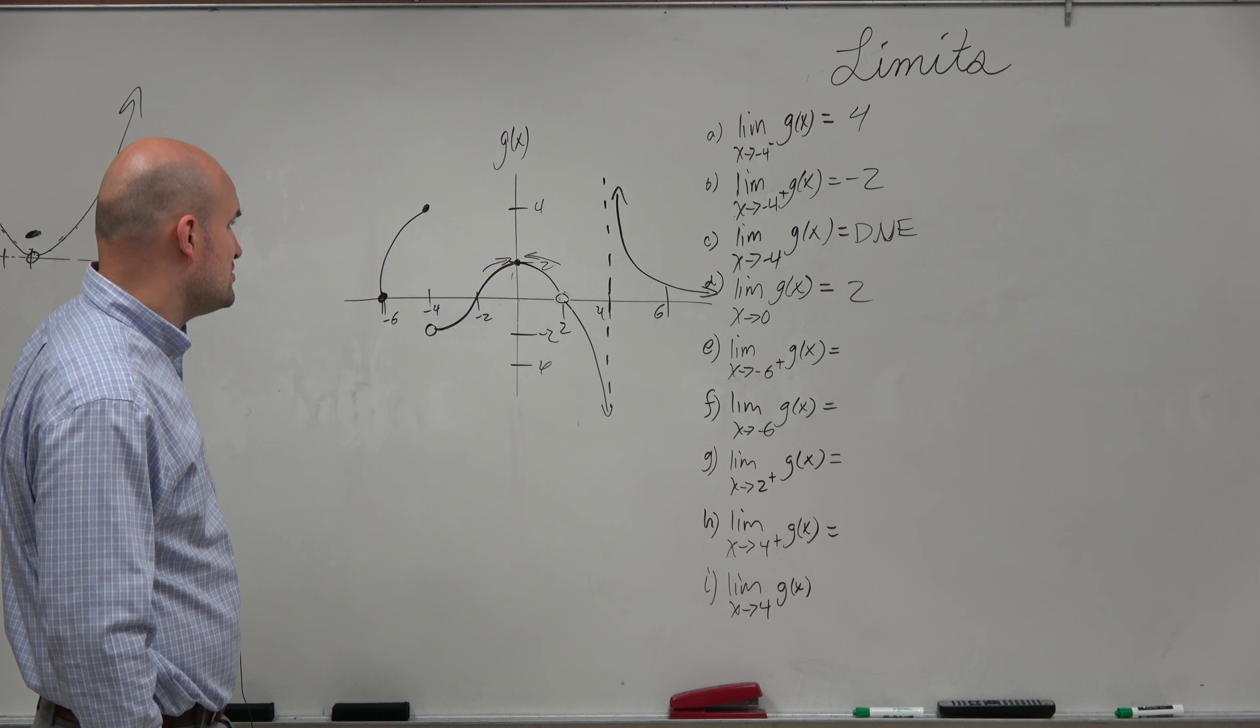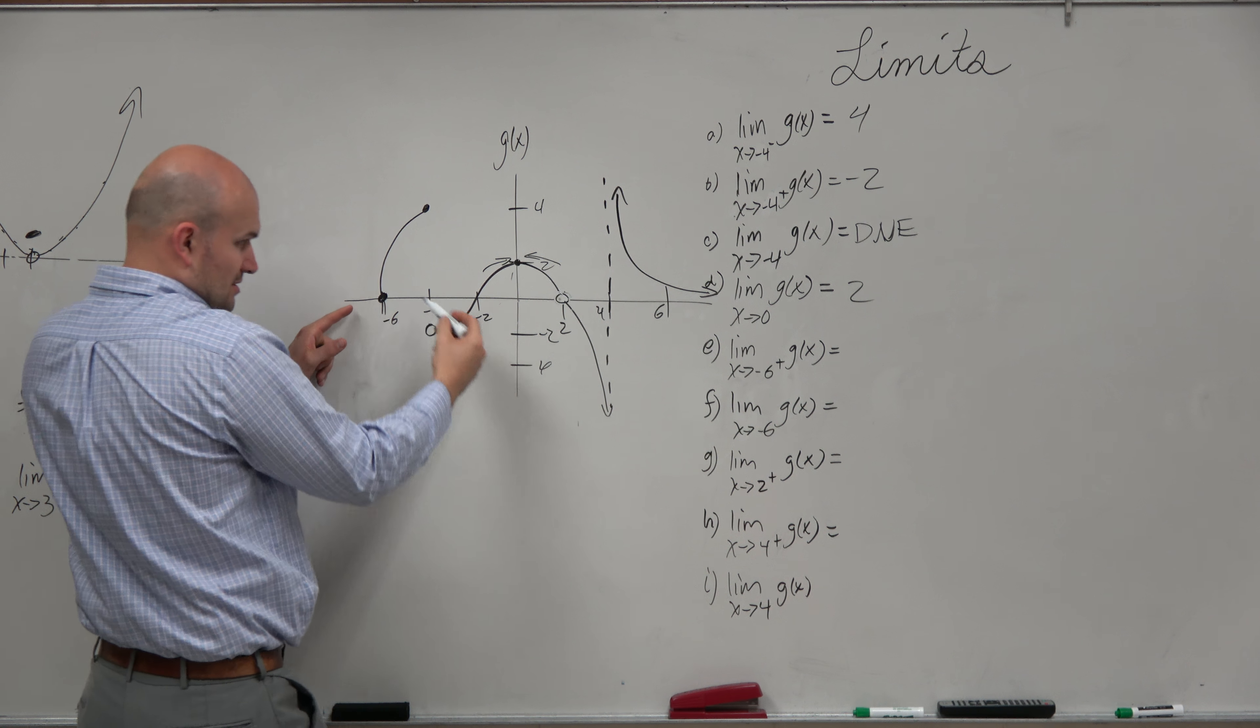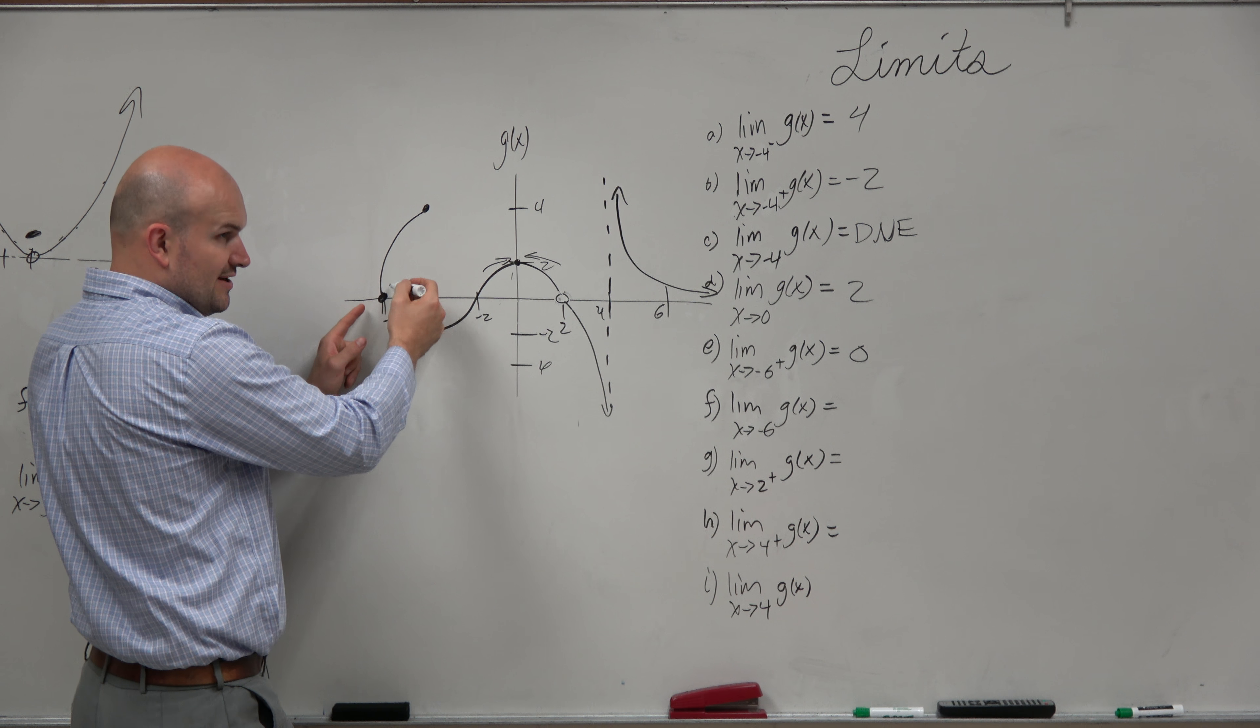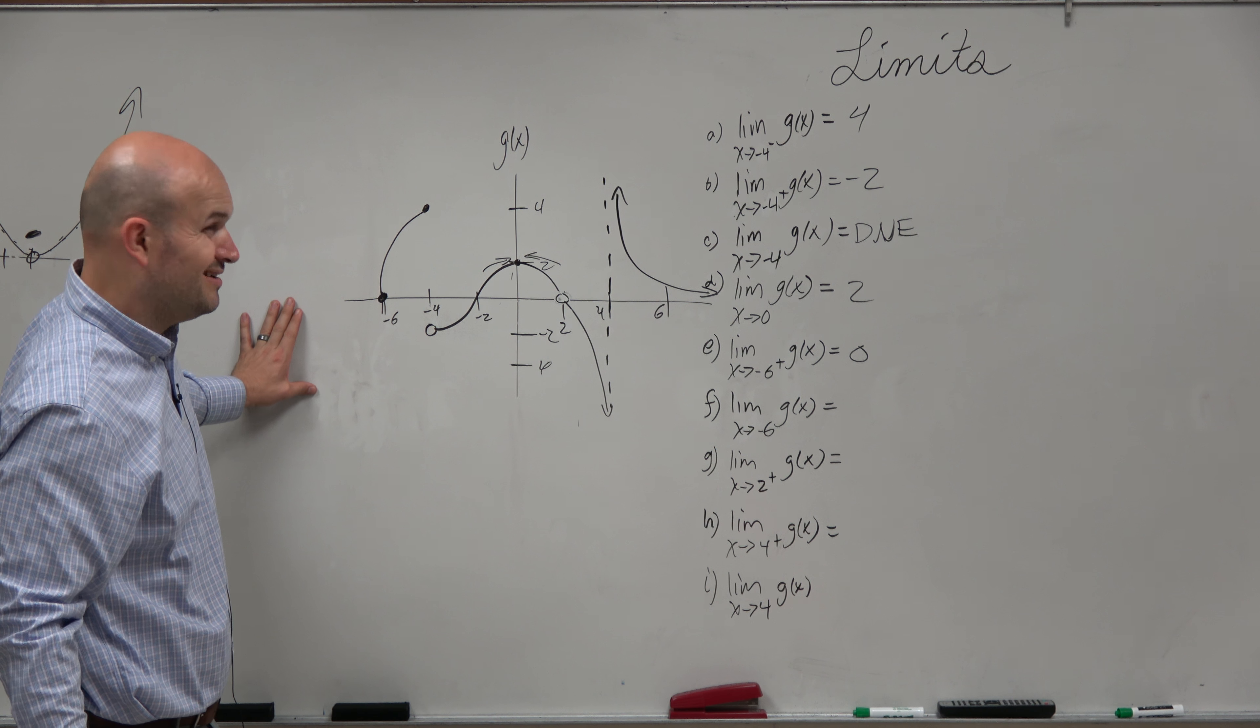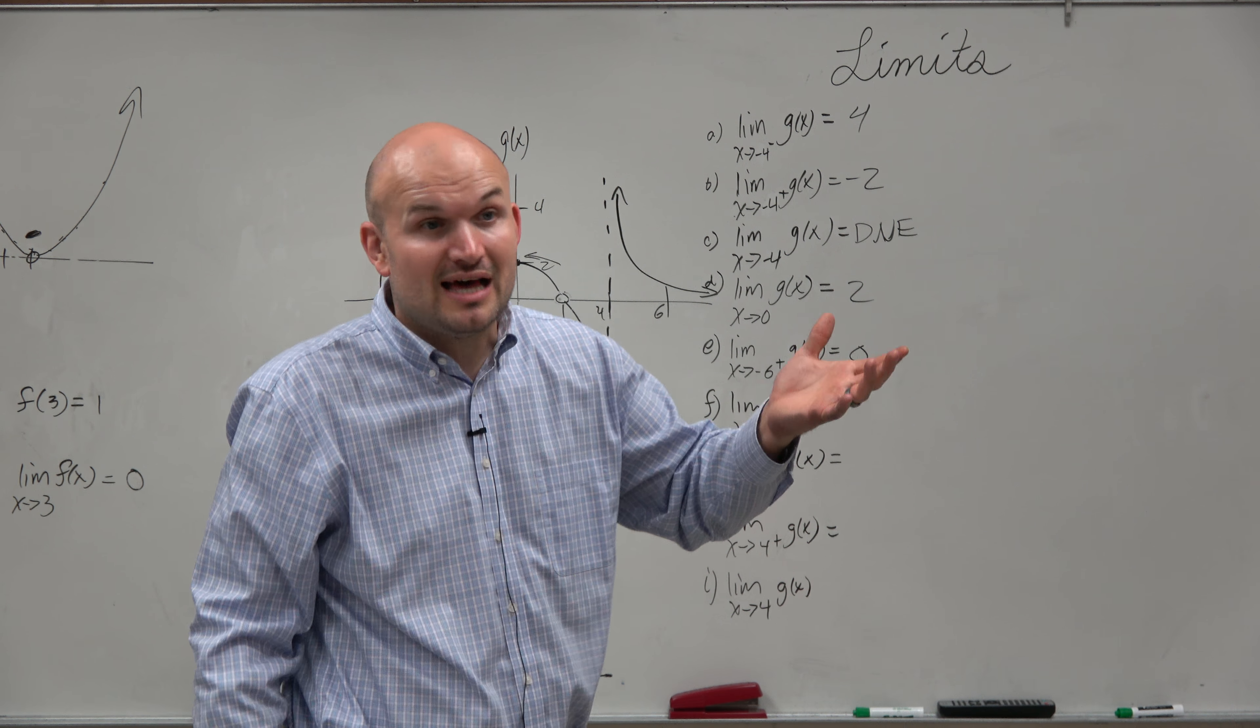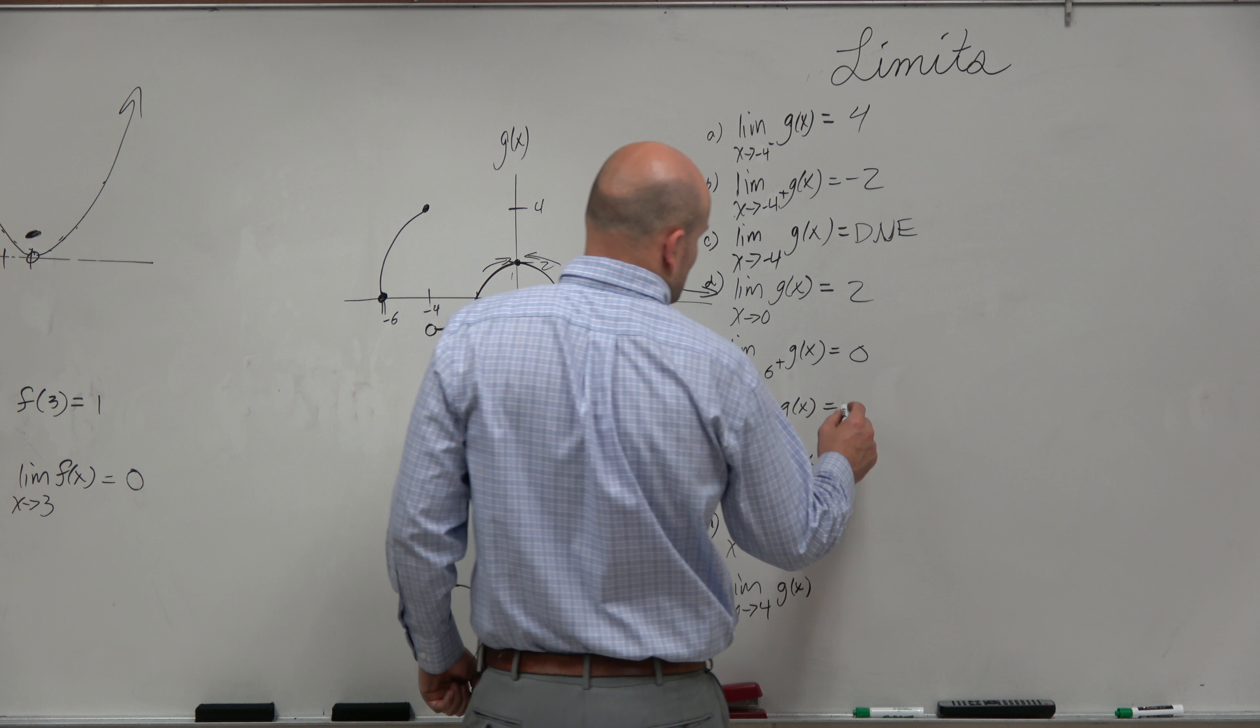Next one. What about as we approach negative 6 from the right? So as we're going from negative 6 from the right, we're getting really close to which y value? 0. What about as we approach the general limit from negative 6? So from the right, we're approaching 0. From the left, is there anything on the left? No. So is it even possible to approach from the left, or there's nothing there? Not really. So since we don't have anything to the left, we can't approach from the left. And since our definition says we have to approach the same value from the left and the right, this does not exist.